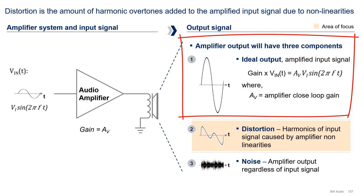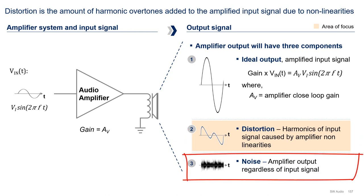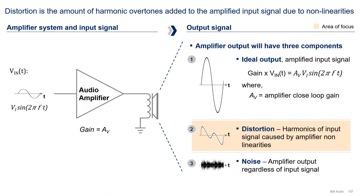This is really what you want. Distortion, which are the harmonics of the input signal caused by the amplifier non-linearities — I'll explain later what I mean by harmonics. And noise, which is the amplifier's output regardless of input signal. In this video, we will focus on distortion, more specifically on harmonic distortion. There is another type of distortion called intermodulation distortion, but this will be a subject of another video.